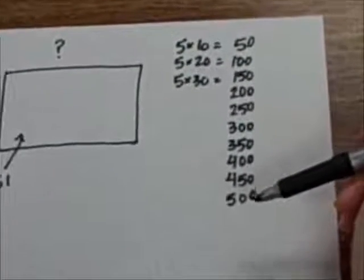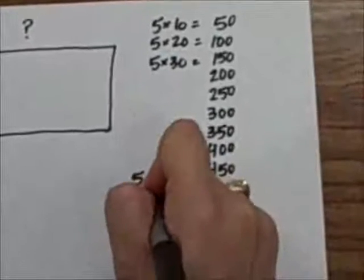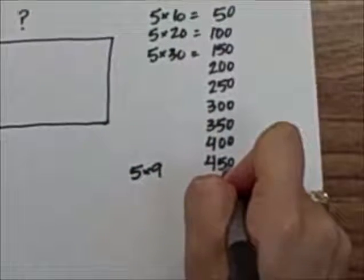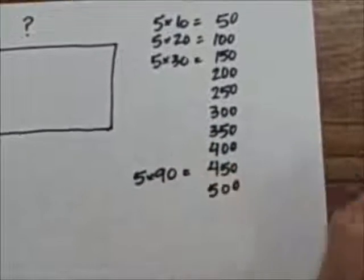The closest number I see to 451 is 450. Well, I know if 5 times 9 is 45, then I know 5 times 90 is 450.